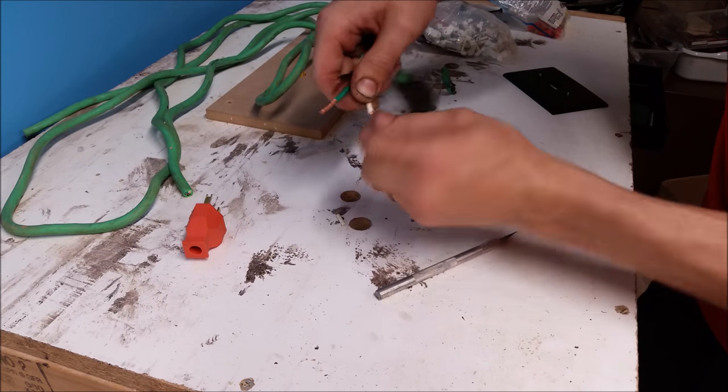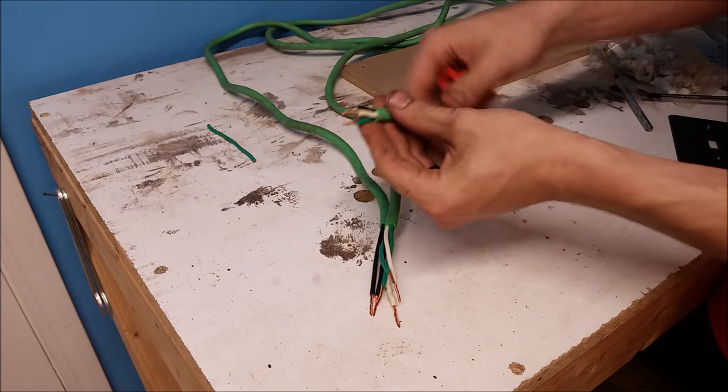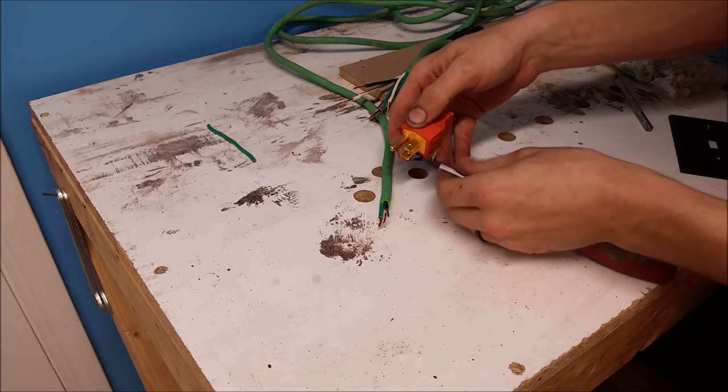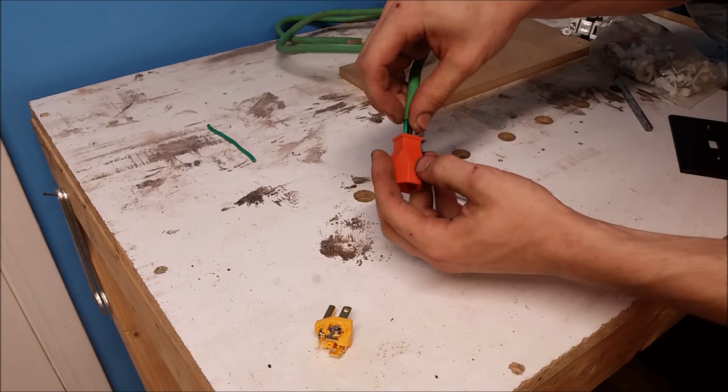We're also going to strip both ends of the longer cord, but on one end you only have to strip back about an inch of the casing. That's going to be our plug end. So we're going to take apart our plug and we're going to slide the wires through it.